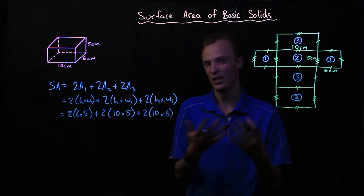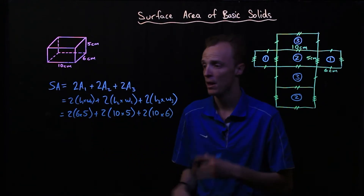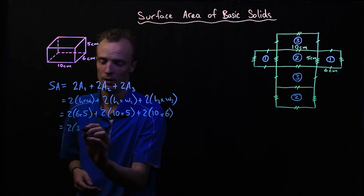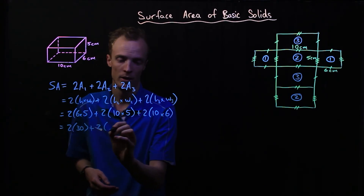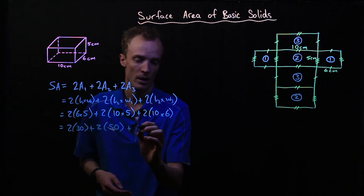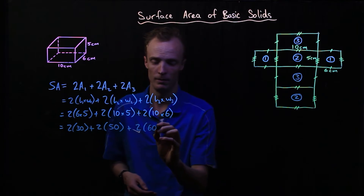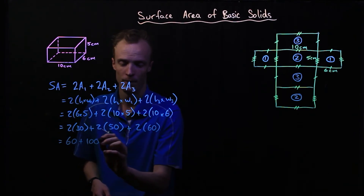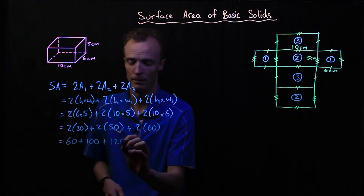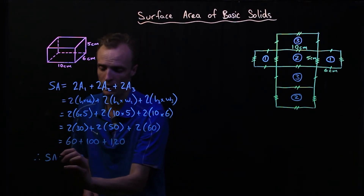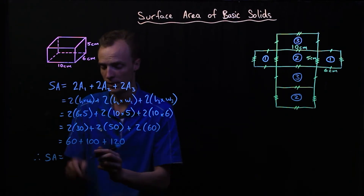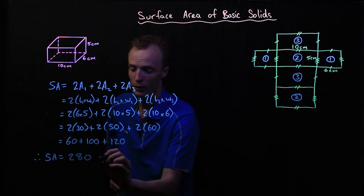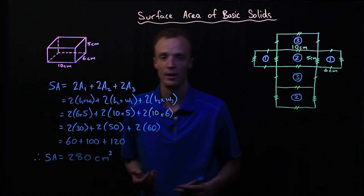From here we either put it into a calculator or simplify step by step. 6 times 5 is 30; 10 times 5 is 50; 10 times 6 is 60. Then 2 times 30 is 60, 2 times 50 is 100, and 2 times 60 is 120. Therefore, our surface area is 60 + 100 + 120 = 280. All measurements were in centimetres, so the answer is 280 square centimetres.